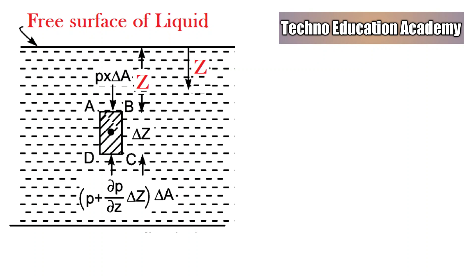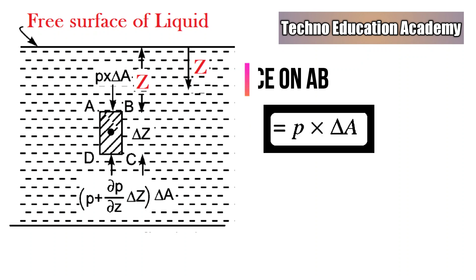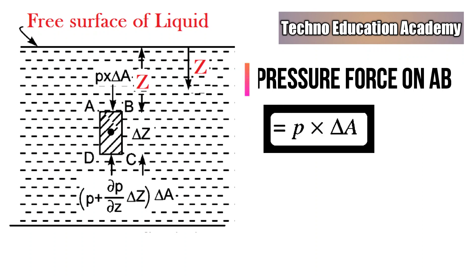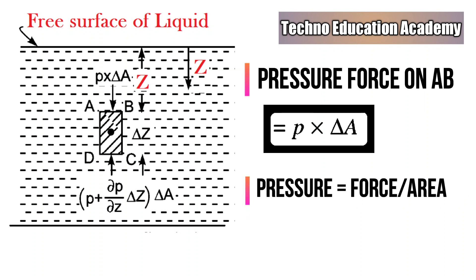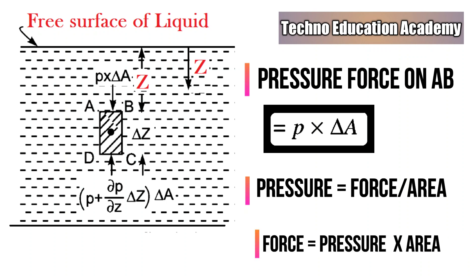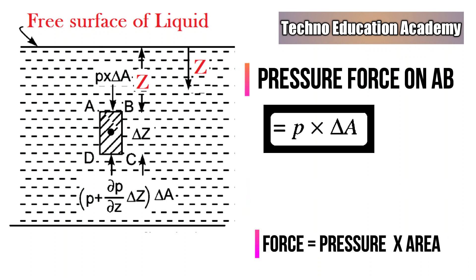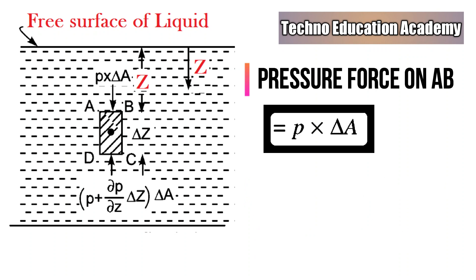Here we are considering the different pressure forces acting on the fluid element as well as the weight of the fluid element. The first pressure force on face AB equals P into delta A. We know that pressure equals force upon area, so force equals pressure into area. The pressure force on face AB equals P into delta A and it acts perpendicular to face AB in the downward direction, so it is considered as a negative sign.